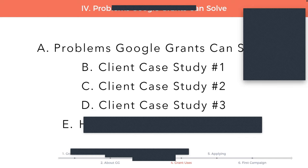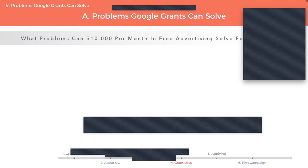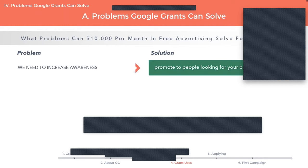As Simon mentioned, we'll be going through some problems that Google Grants can solve. What problems could $10,000 per month in free advertising solve for your nonprofit? Oftentimes I hear from nonprofits that they need to increase awareness of their organization. If you have the Google Grant, you can use it to promote your organization to people who are looking for your brand, your cause, or your content online. For example, if you are a mental health organization that talks about depression or anxiety, someone looking for tips to battle depression or anxiety on Google can find your organization if you create an ad around this.